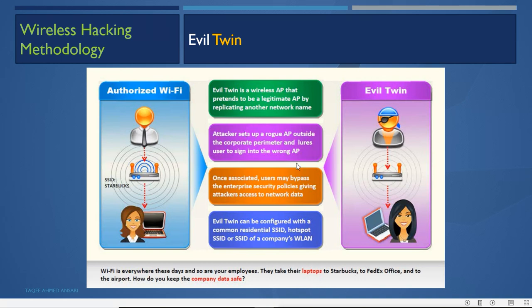The attacker sets up a rogue AP outside the corporate perimeter and lures users to sign into the wrong AP. Once associated, users may bypass enterprise security policies, giving the attacker access to network data. The evil twin can be configured with common residential SSIDs, hotspot SSIDs, or the SSID of a company's wireless LAN.